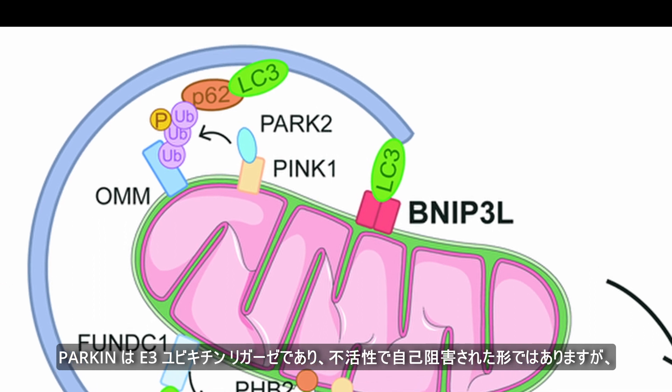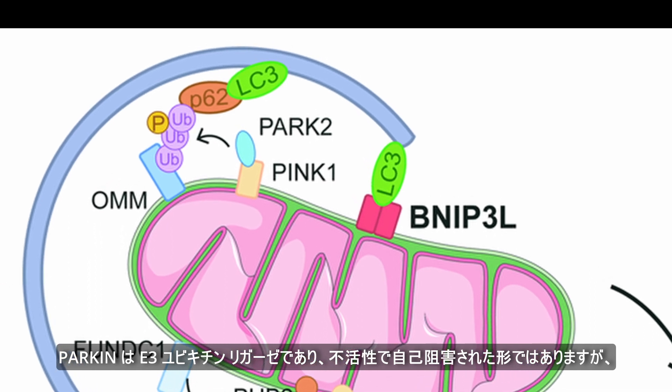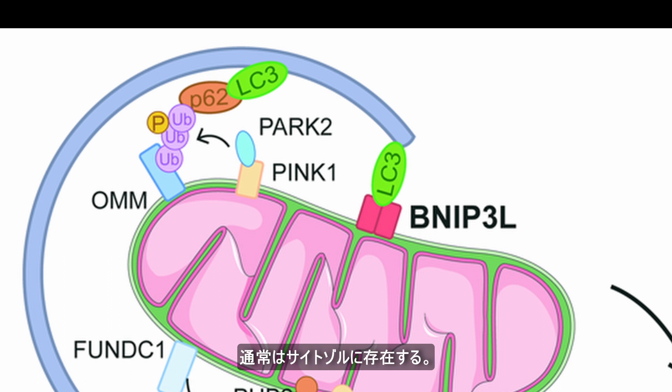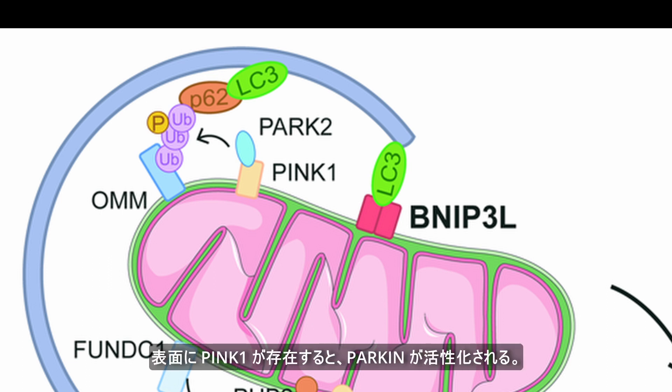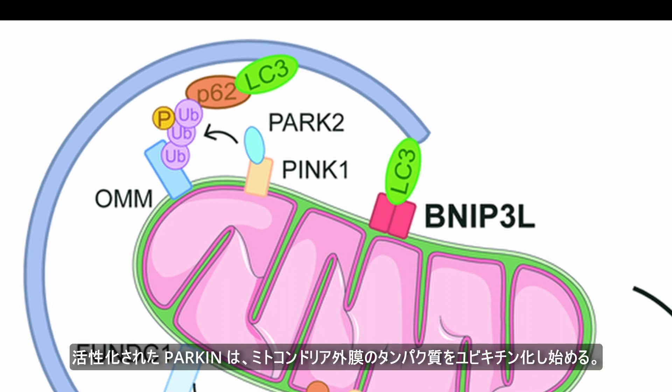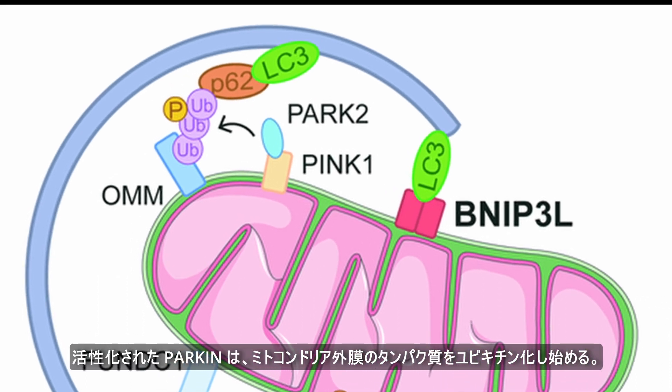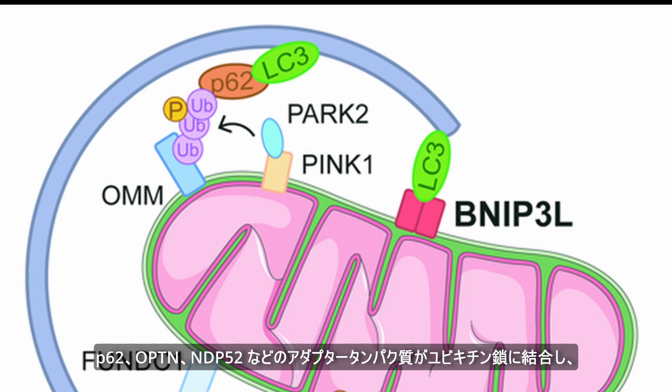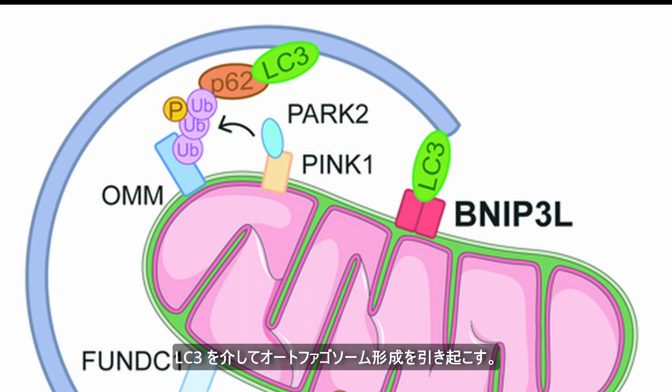Parkin is an E3 ubiquitin ligase that is normally present in the cytosol in an autoinhibited form. However, the presence of PINK1 on the surface activates Parkin. Activated Parkin then begins to ubiquitinate proteins on the outer mitochondrial membrane. Adaptor proteins such as P62, OPTN, and NDP52 attach to the ubiquitin chains and trigger autophagosome formation through LC3.